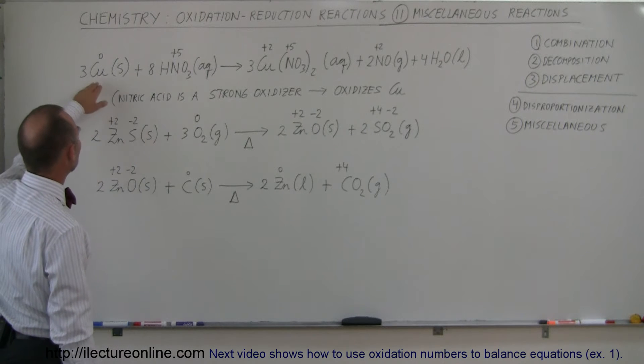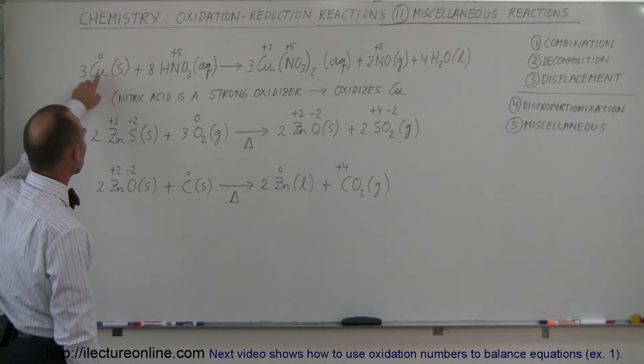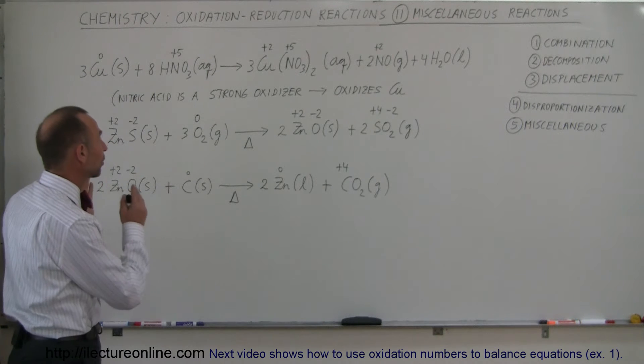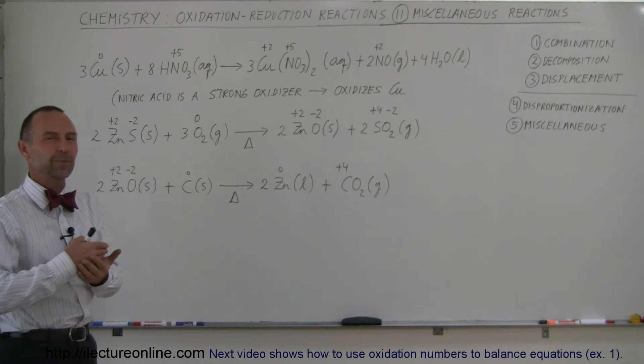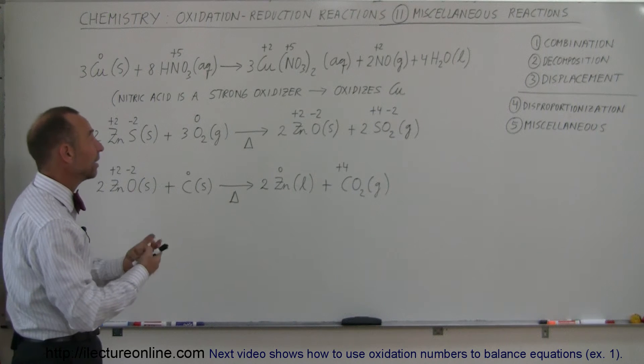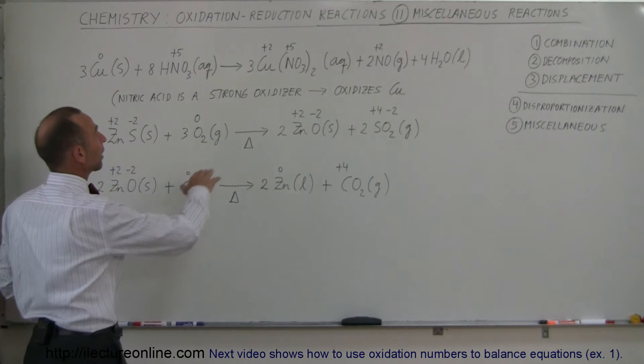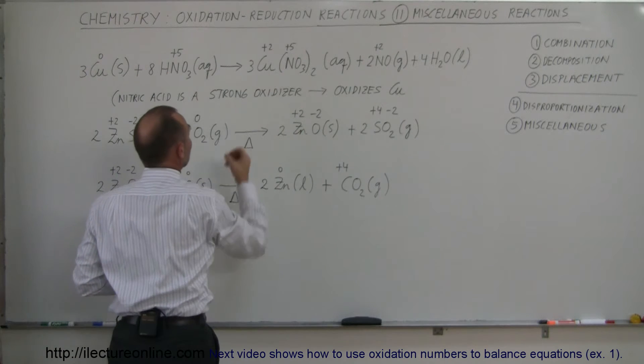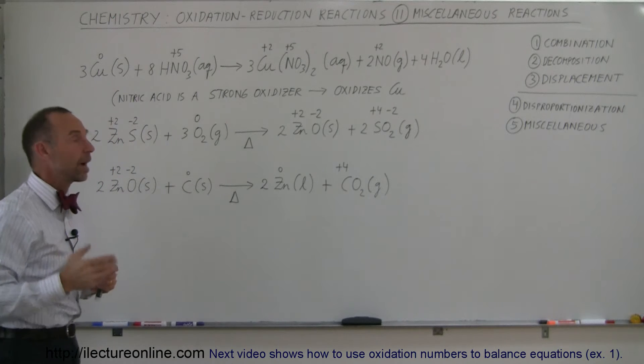Here we have copper solid, so not oxidized, and we're mixing it with nitric acid. In this case, the nitric acid produces the oxidation—it's the oxidation agent. It's going to oxidize copper from a zero oxidation state to a plus two oxidation state by removing electrons from copper.